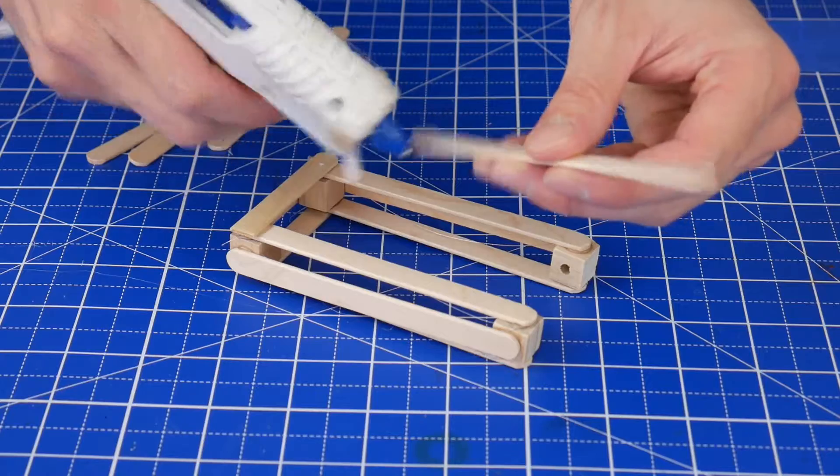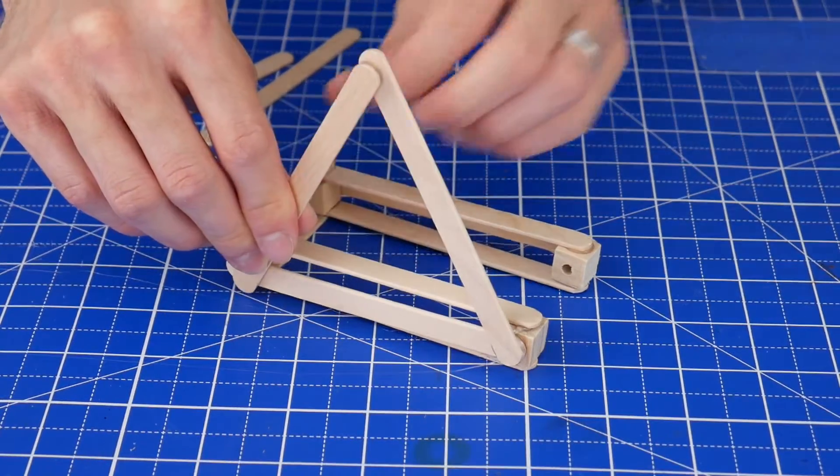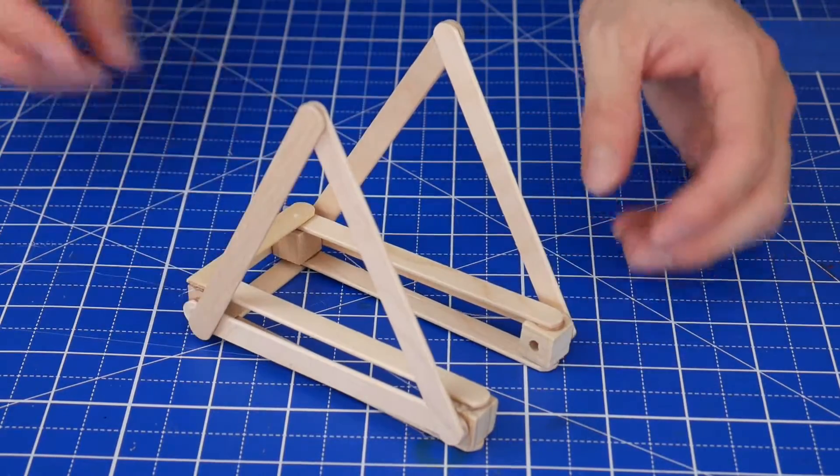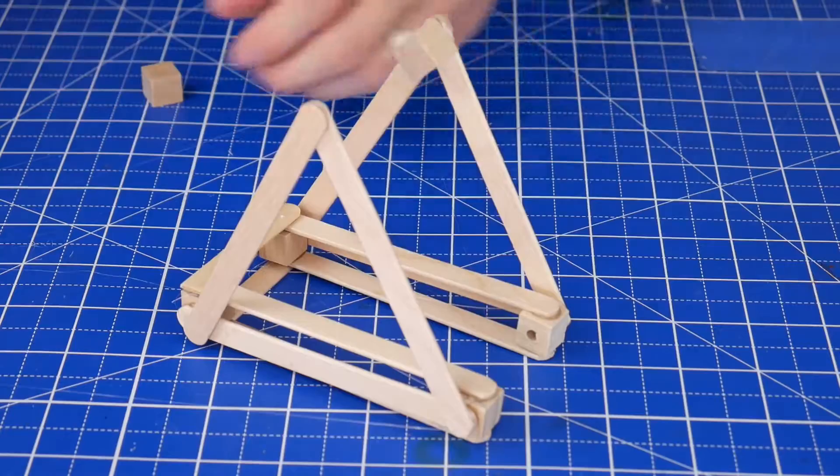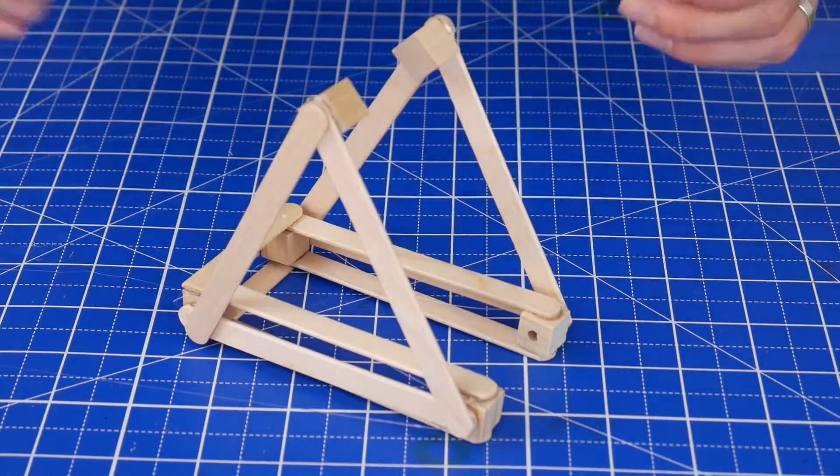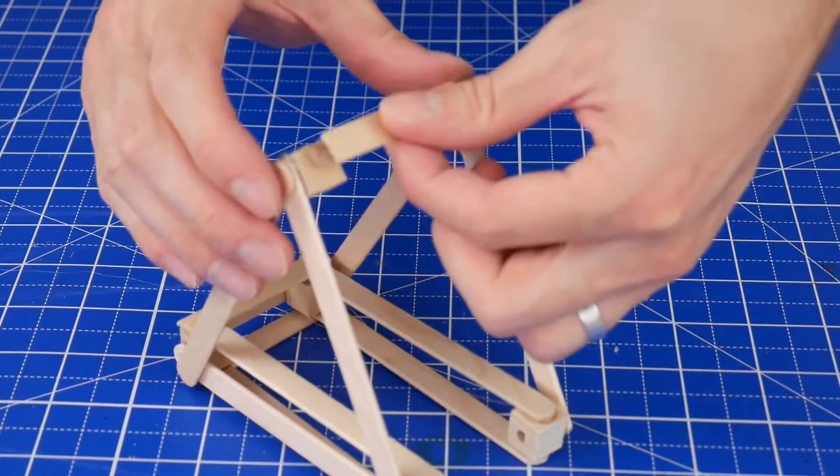Next, build the triangular supports on the sides of the base. And glue two regular cubes to the top of each of those triangles. Then glue the remaining half stick pieces onto all four sides of these cubes.